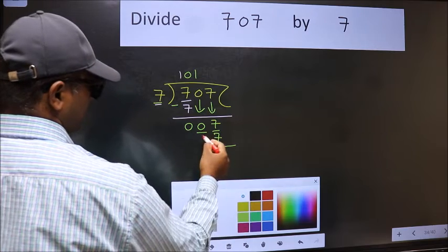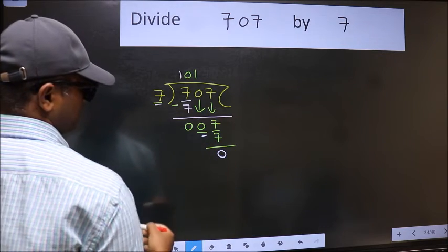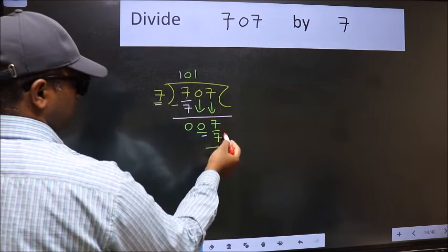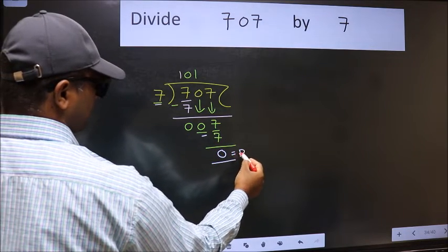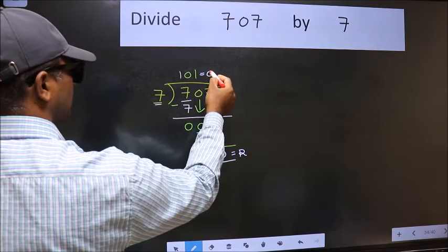Now we should subtract. We get 0. No more numbers to bring down, so we stop here. This is our remainder and this is our quotient.